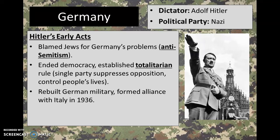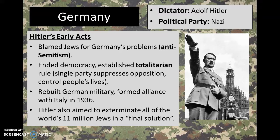Hitler aimed to rebuild the German military and restore Germany to the power it had before World War I. To do so, he formed an alliance with Benito Mussolini and Italy in 1936 — two countries in Europe with similar goals forming an alliance that would hopefully lead to gains for both sides. Hitler's final solution to Germany's problems, which he blamed on Jewish people, was to exterminate every one of the world's 11 million Jews. The actions taken were all awful and were likely the worst single action in the history of mankind against one group of people, and we'll talk about that more as we go through the chapter.